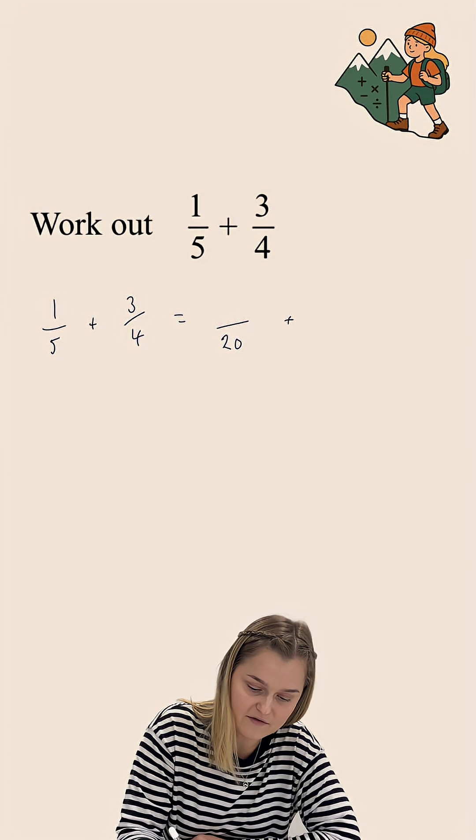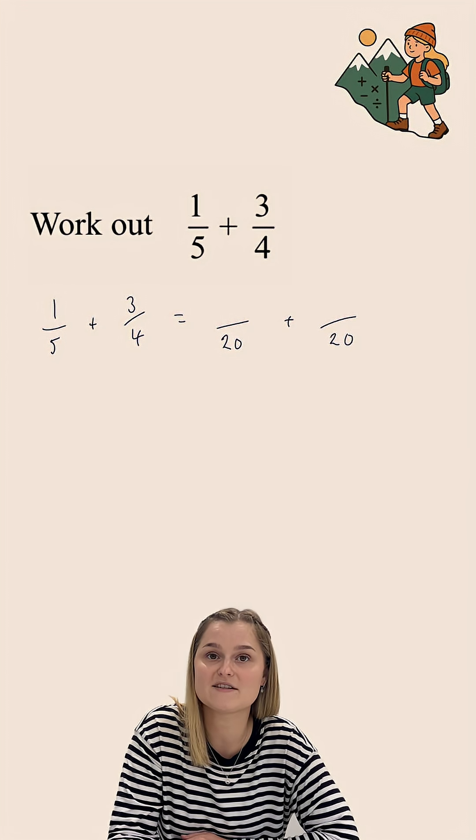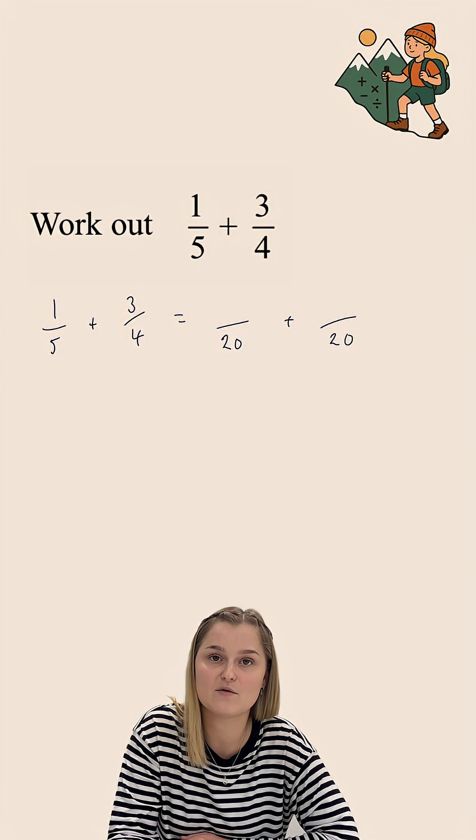Now, in this case, I'm going to change both fractions here to have a denominator of 20. 20 is the lowest number in both the 5 and the 4 times tables.